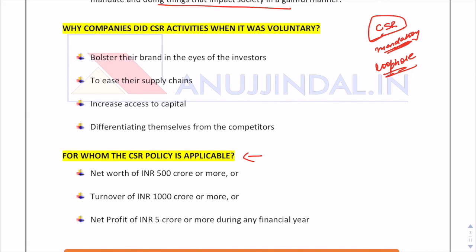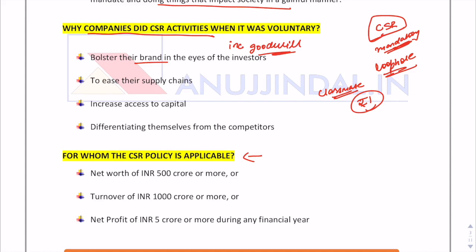Even before amendments, some companies voluntarily did CSR. For example, ITC's Classmate registers state on the back page that for every four registers you buy, one rupee will be contributed to social development initiatives supporting primary education. Companies did this to bolster their brand, increase goodwill in the eyes of investors, ease supply chains, attract capital at a lower cost of borrowing, and differentiate themselves from competitors.